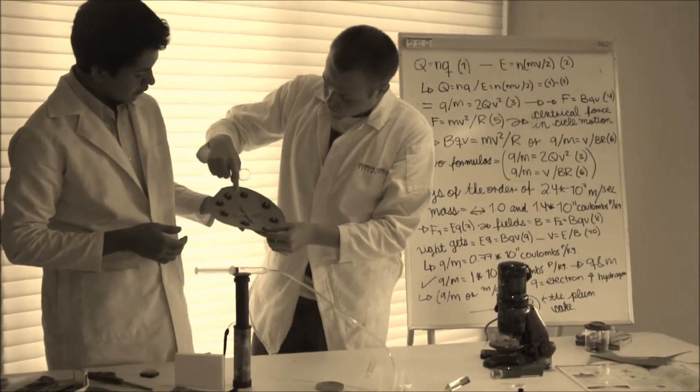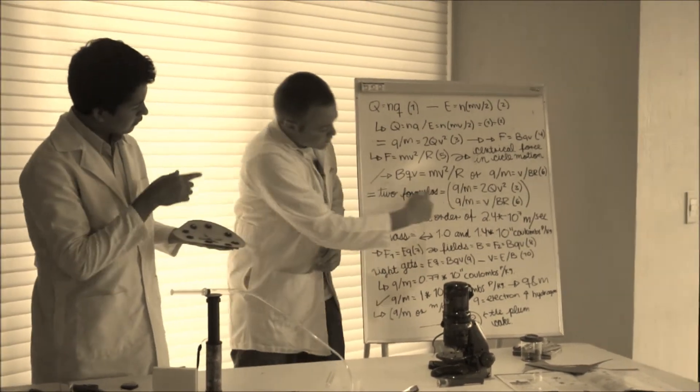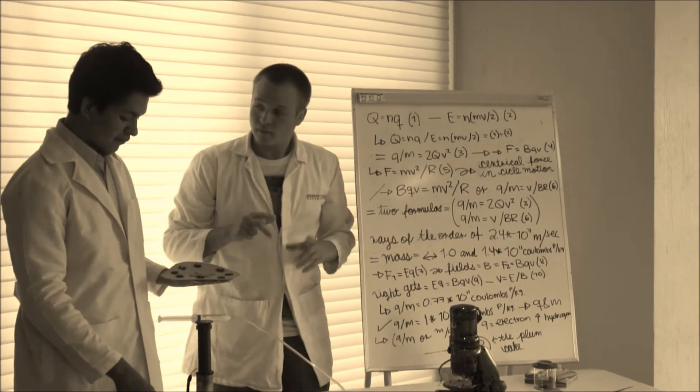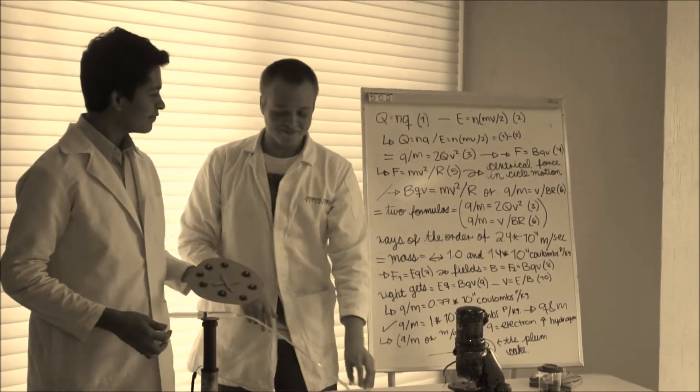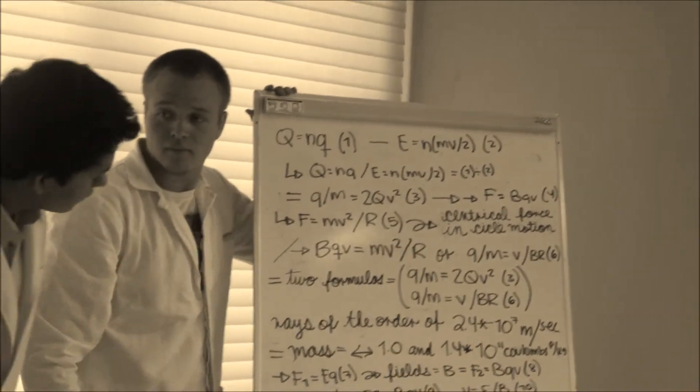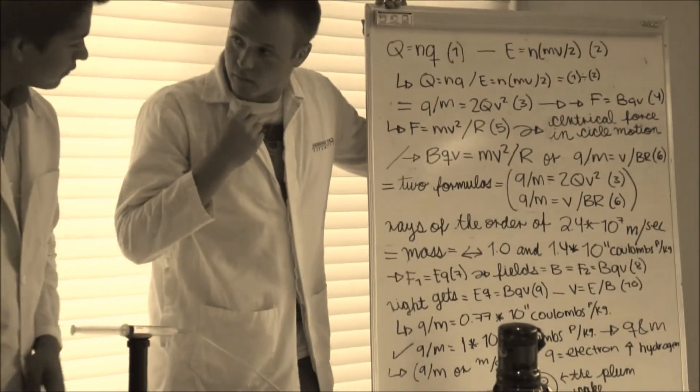Thompson interpreted the deflection of the rays by the electrically charged blades and magnets as evidence of bodies much smaller than atoms. That he calculated as having a very large value for the charge to mass ratio.